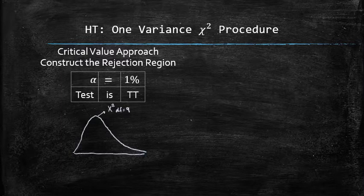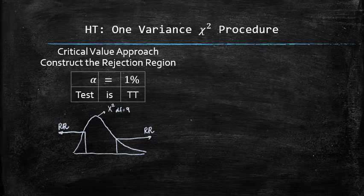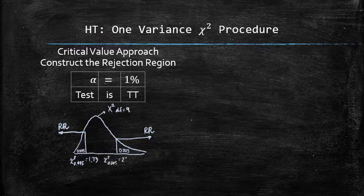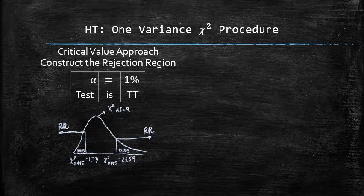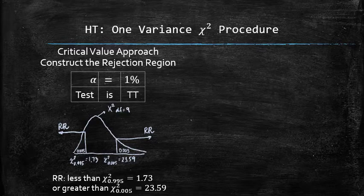We draw the rejection region under the chi-square probability density curve with 9 degrees of freedom, according to the type of the test. So a two-tailed test will have the rejection region in both tails. The region must have the total area equal to the significance level 1%. The critical values that define the rejection region are chi-square 0.995 and chi-square 0.005. So the entire region can be described as all the values to the left of 1.73 and to the right of 23.59.